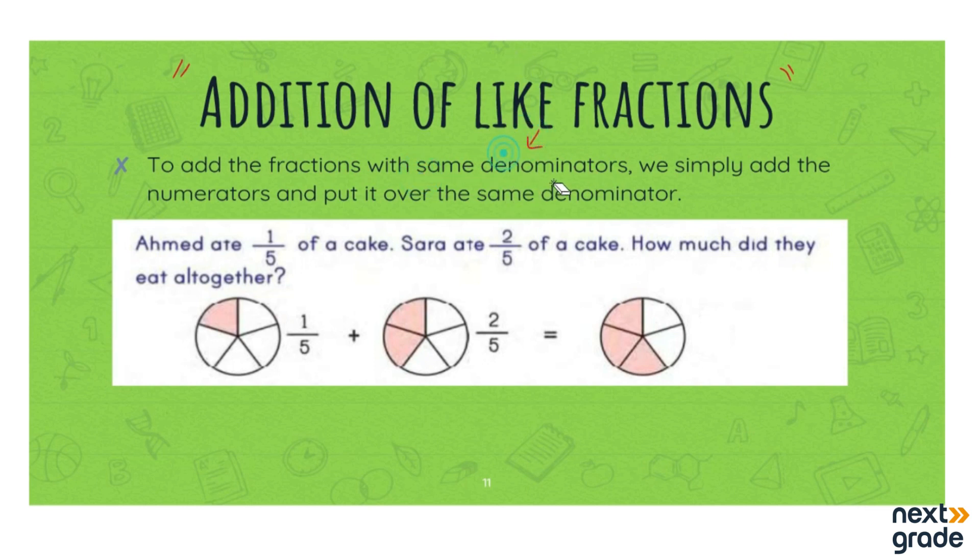If you want to add fractions with same denominators, we simply add the numerators and put it over the same denominator. When denominator is the same, we simply add numerators. For example, 1/5 + 2/5.